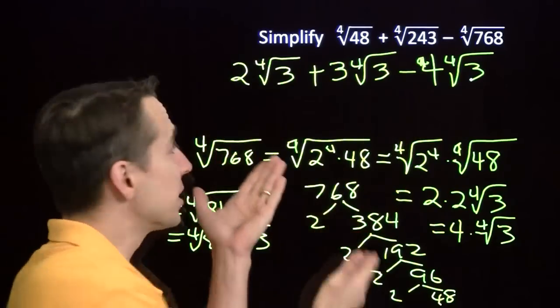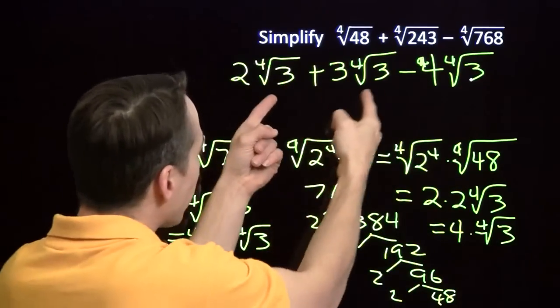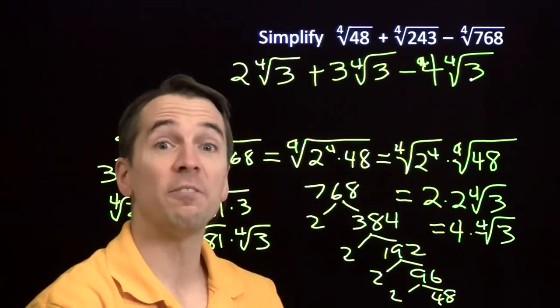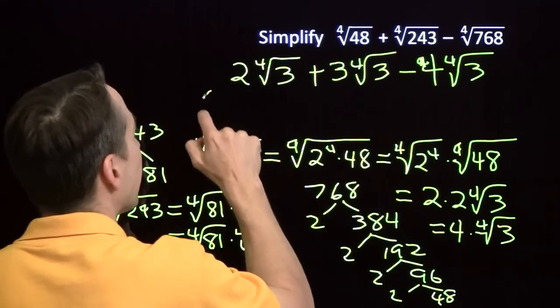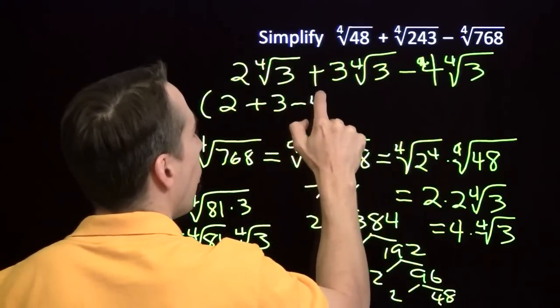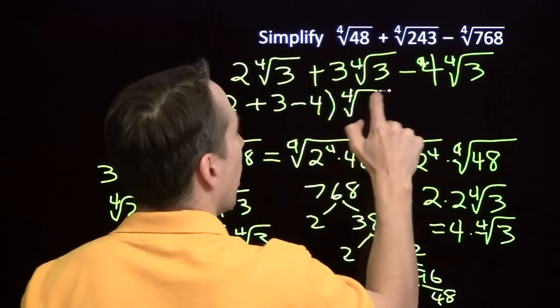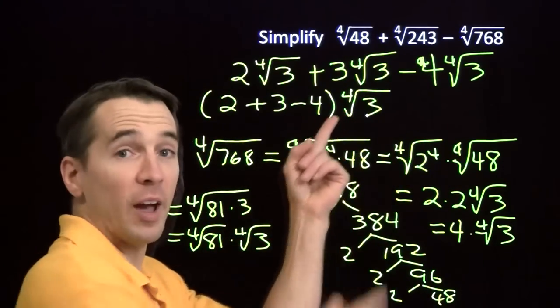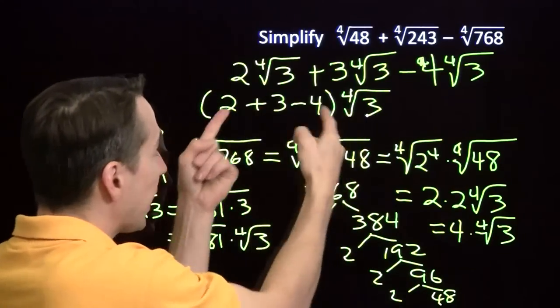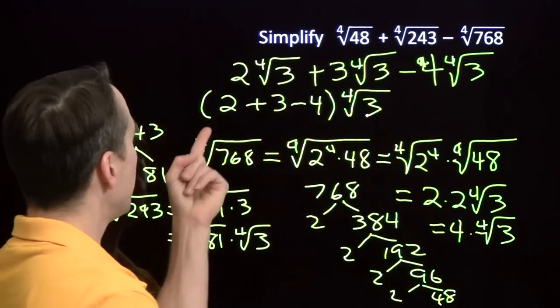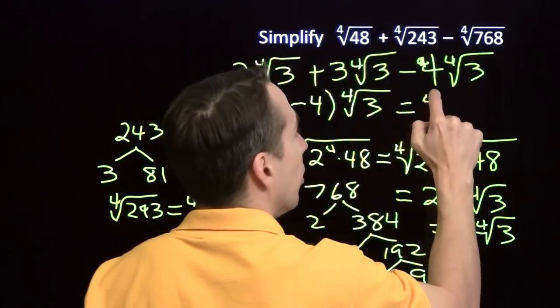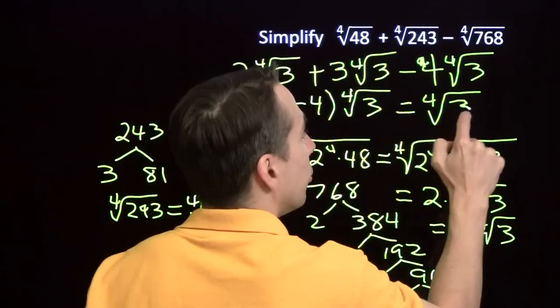Now we can simplify this, because we have the same radical notation, the same radical expression here, the 4th root of 3. In all three of these, we can factor it out. We factor it out, and we write this as 2 plus 3 minus 4 times the 4th root of 3. All we're doing here is factoring out the 4th root of 3. And you can check that by distributing out this product. Multiplying this back out, you'll get this. Now this is easy to compute. 2 plus 3 is 5. 5 minus 4 is 1. So this simply comes out to the 4th root of 3.